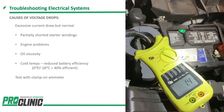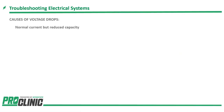Another question: why is the tester on the negative cable? You can put it on either one — it'll just flip the numbers to negative. Open the Q&A tool in your Zoom toolbar if you have a question, feel free to ask away.